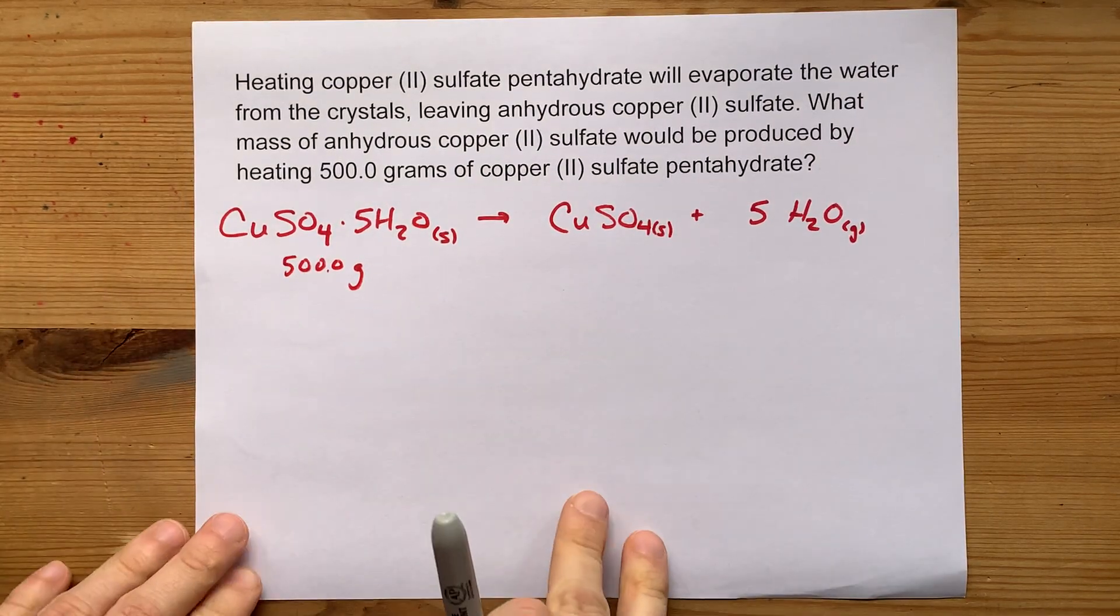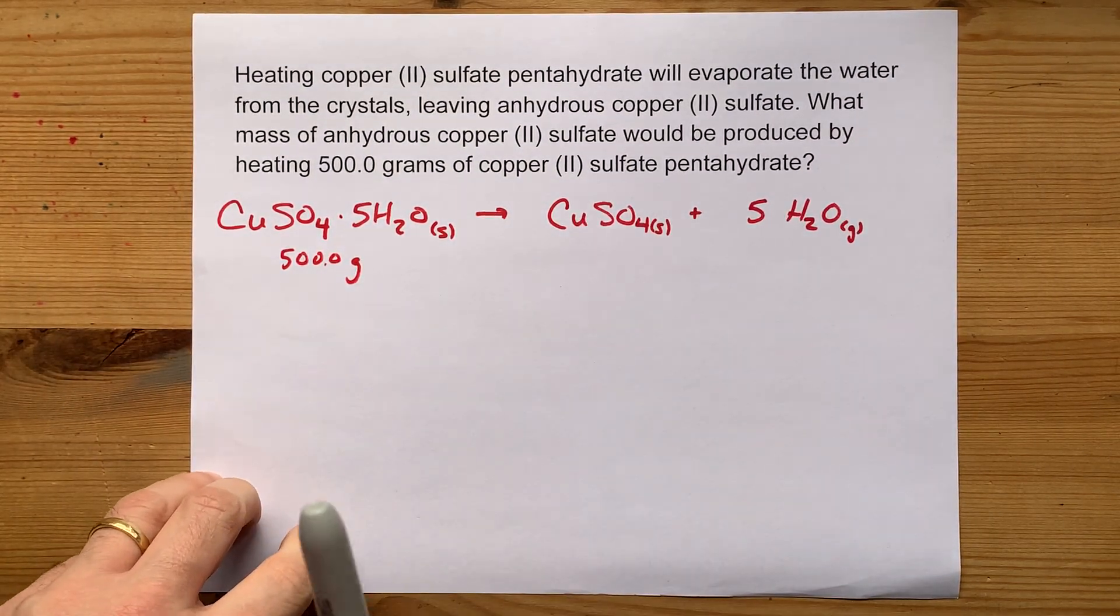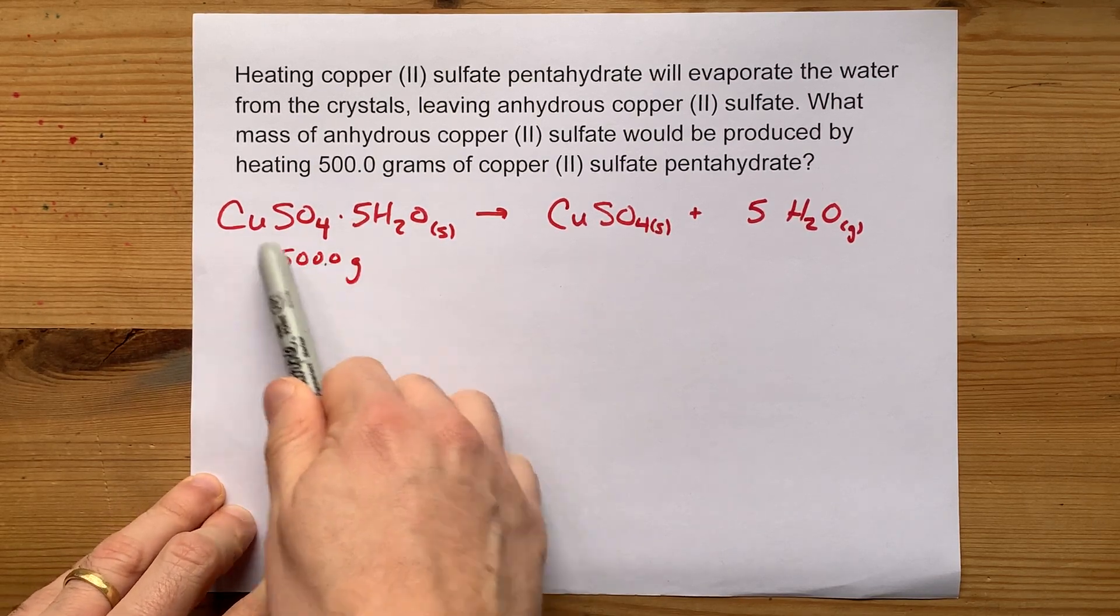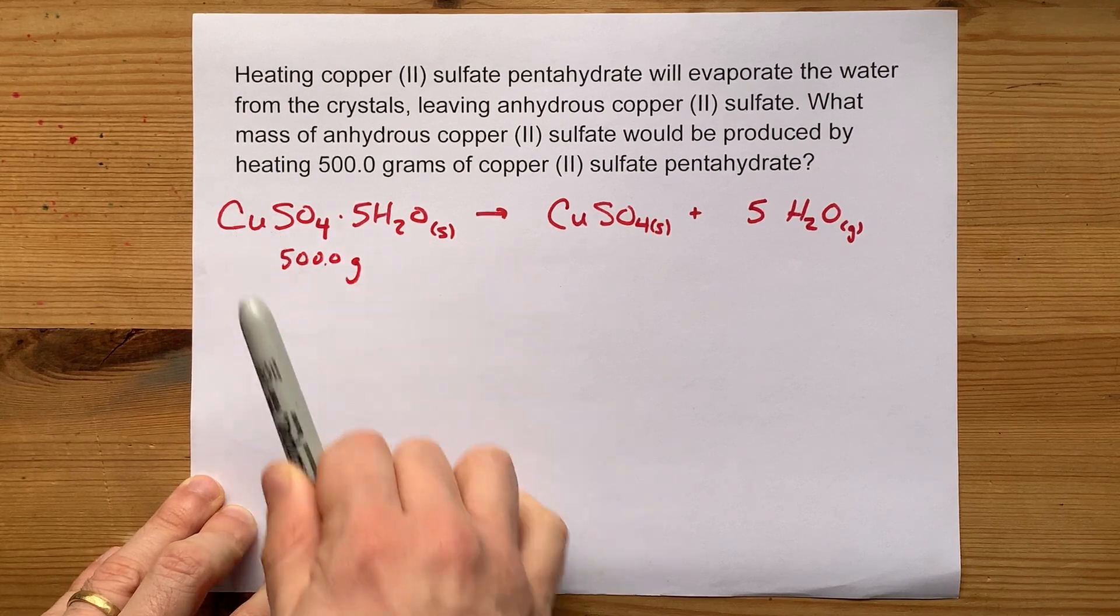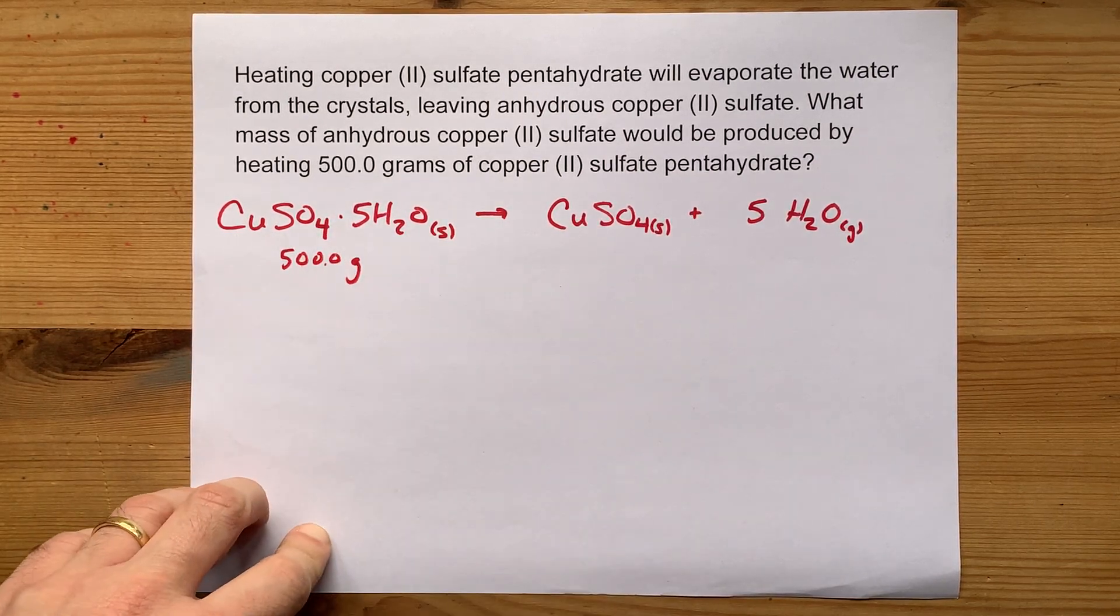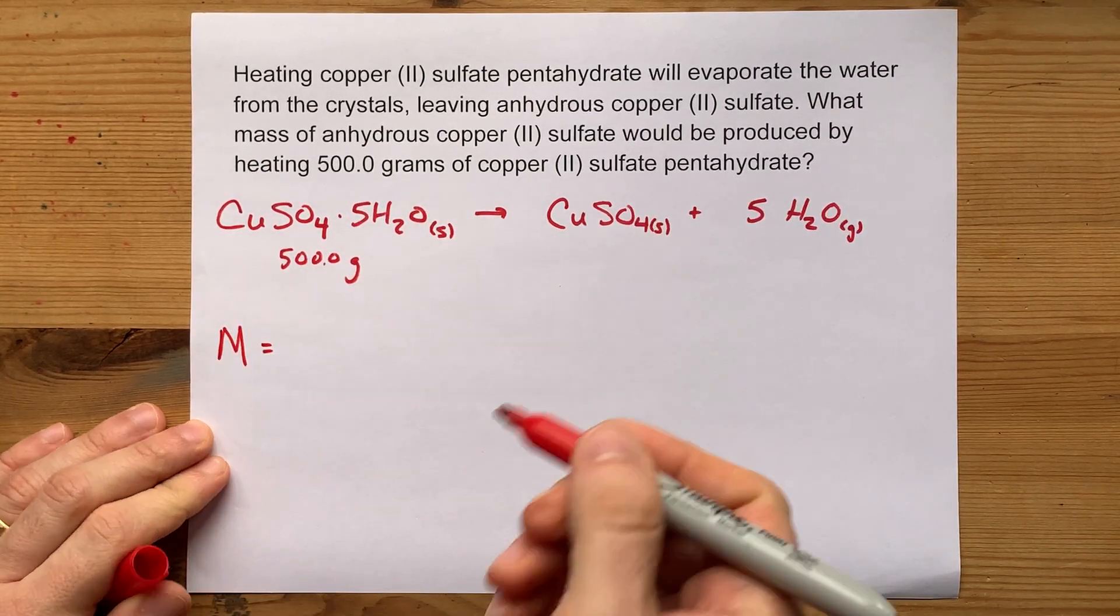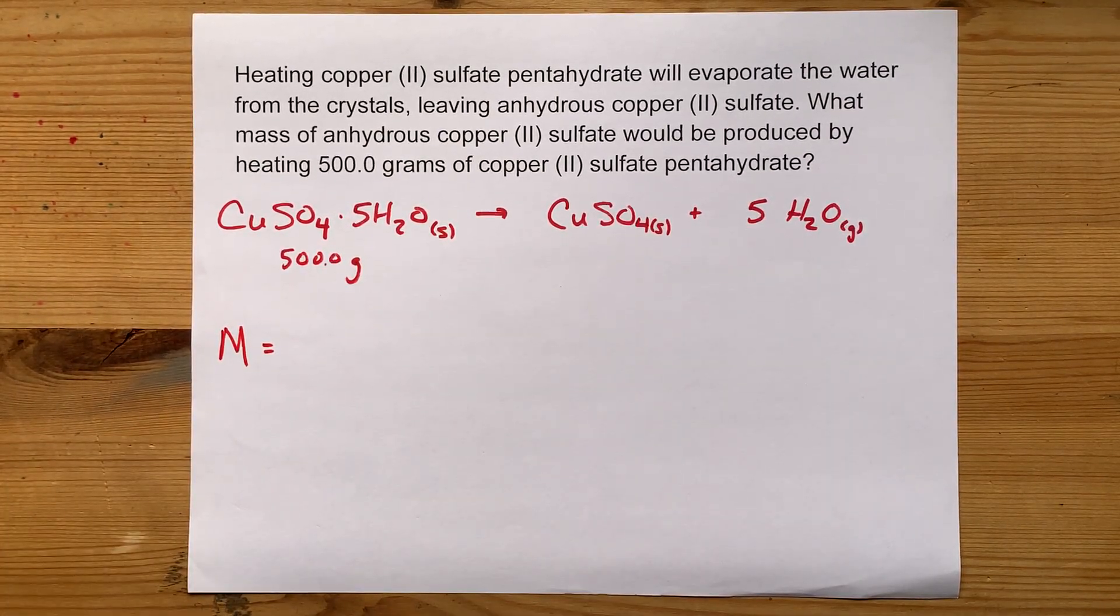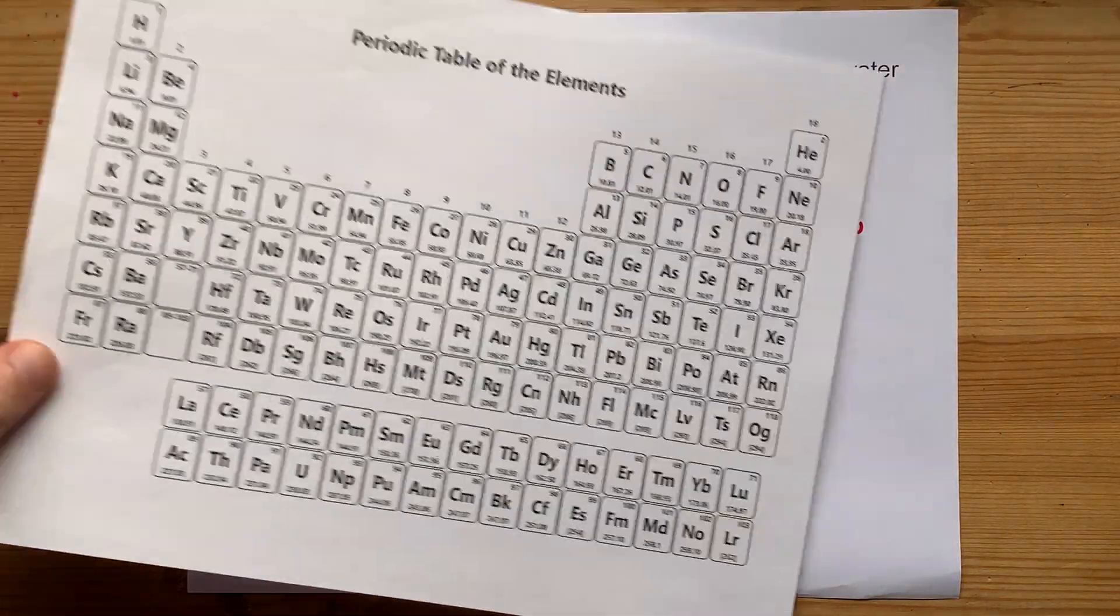But how much new stuff? Well, it's either going to become this or this. Wouldn't it be nice to know how much of the total mass of this was contributed by the copper sulfate versus the water? Calculating the molar mass of that compound will help you see it. The molar mass of the compound is the sum of the molar masses of all the things that make it up.